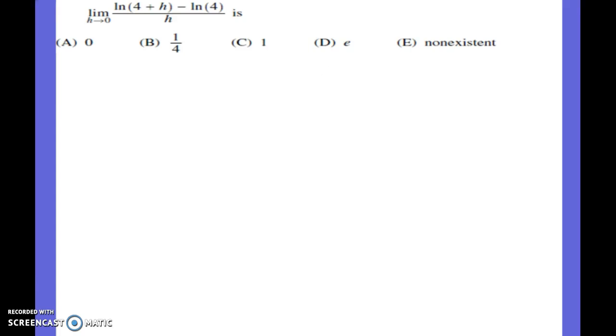Here we have another definition of a derivative. What it's actually asking for is the derivative of ln of x evaluated at x equals 4. And so, just find the derivative of ln of x, which is equal to 1 over x, and then evaluated at x equals 4 gives you 1 fourth. And there's your answer.